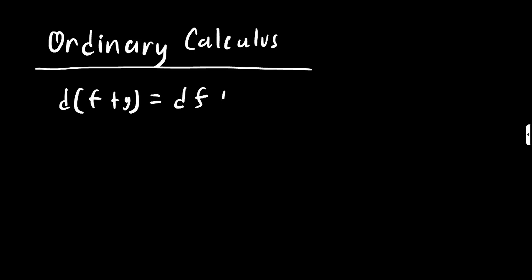So in ordinary calculus, you have things like that the derivative of f plus or minus g is equal to derivative of f plus or minus the derivative of g. You had a bunch of derivative rules, like the derivative of a constant is equal to zero, things like that.